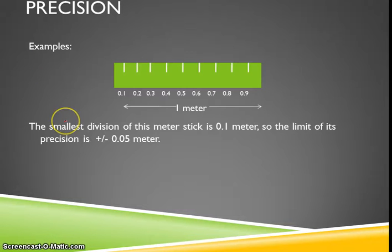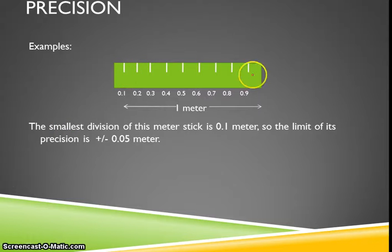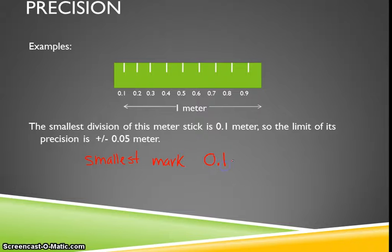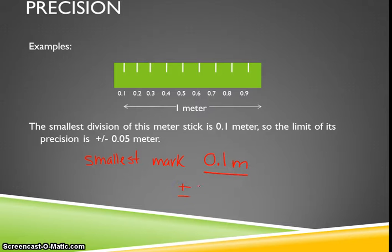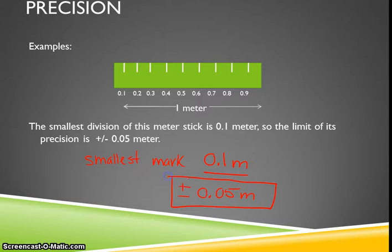An example: imagine a meter stick where the smallest markings are in tenths of a meter. The smallest marking available is one tenth of a meter, so the precision would be half of that smallest marking — which is 0.05 meters. This would be the limit of precision for that meter stick.